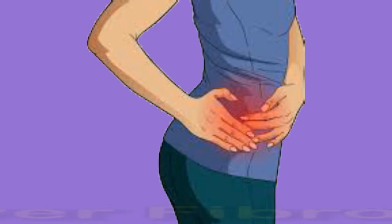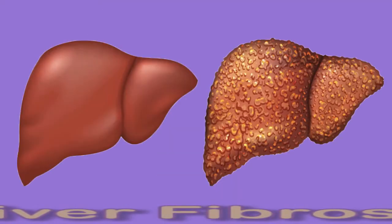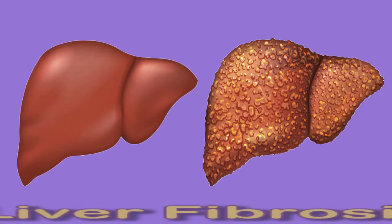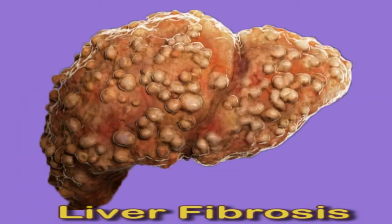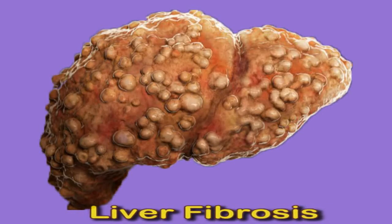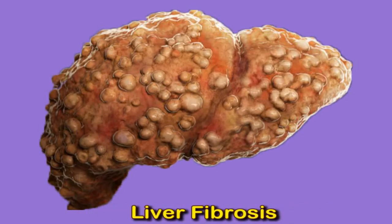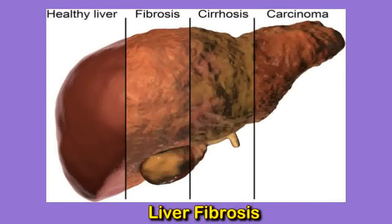Liver fibrosis occurs when repetitive or long-lasting injury or inflammation causes excessive amounts of scar tissue to build up in the organ. Most types of chronic liver disease can eventually cause fibrosis. Unlike healthy liver cells, scar tissue cells cannot self-repair or otherwise function. As a result, fibrosis can reduce overall liver function and impair the organ's ability to regenerate. Scar tissue from fibrosis can also block or limit the flow of blood within the liver, which can starve and eventually kill healthy liver cells, creating more scar tissue in the process.